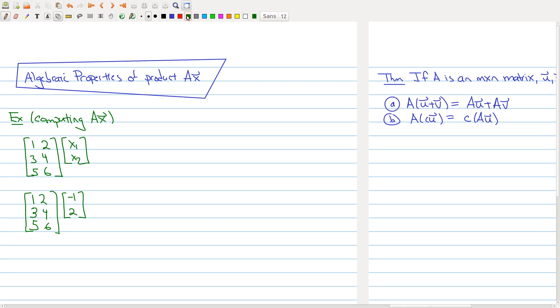Now you'll notice that if you follow the formal definition, you should have x1 times the first column, 1, 3, 5, plus x2 times the second column, 2, 4, 6. And then you're supposed to add all of these guys up. So in the first spot, we get 1 times x1 plus 2 times x2. In the second spot, we get 3 times x1 plus 4 times x2. And in the last spot, we get 5 times x1 plus 6 times x2.